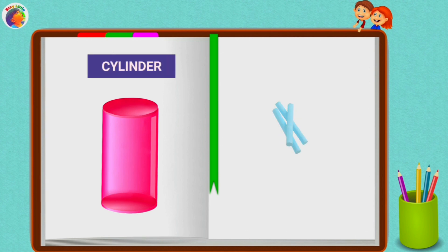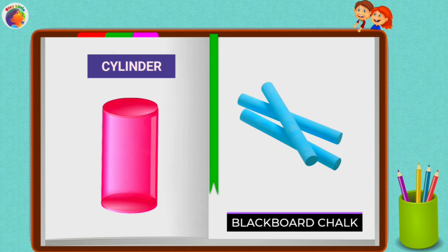Cylinder. A blackboard chalk is cylindrical in shape.